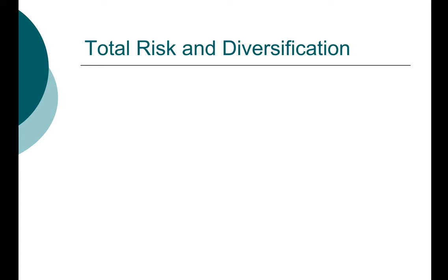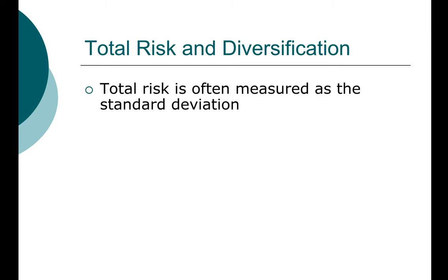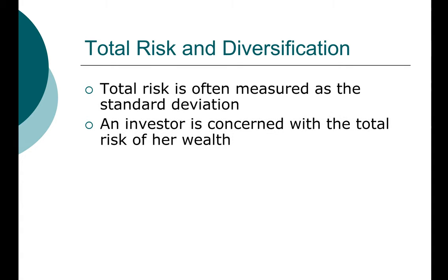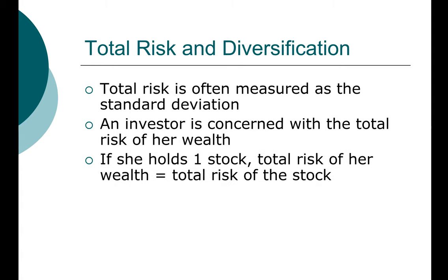Next, let's take a look at risk, particularly risk and diversification. We already talked about the general concept that if we diversify — meaning not putting all our eggs in one basket — we might be able to spread and lower our risk. But before we can do that formally, we need a clear definition of what kind of risk we are talking about. Total risk is often measured as the standard deviation of an investment. An investor is concerned with the total risk of her entire wealth. If an investor holds a single stock, the total risk of her wealth will be the same as the total risk of that particular stock.